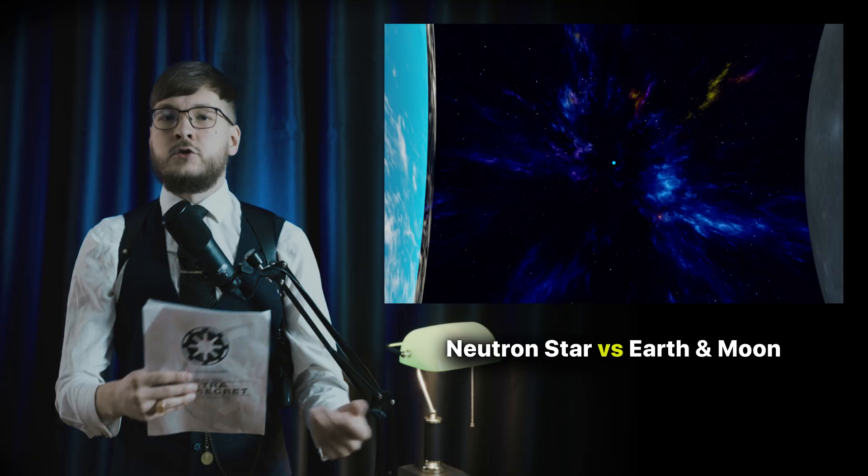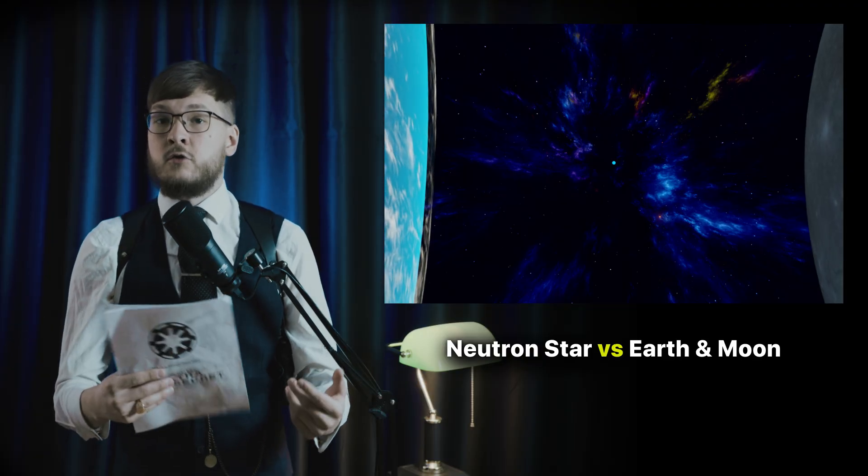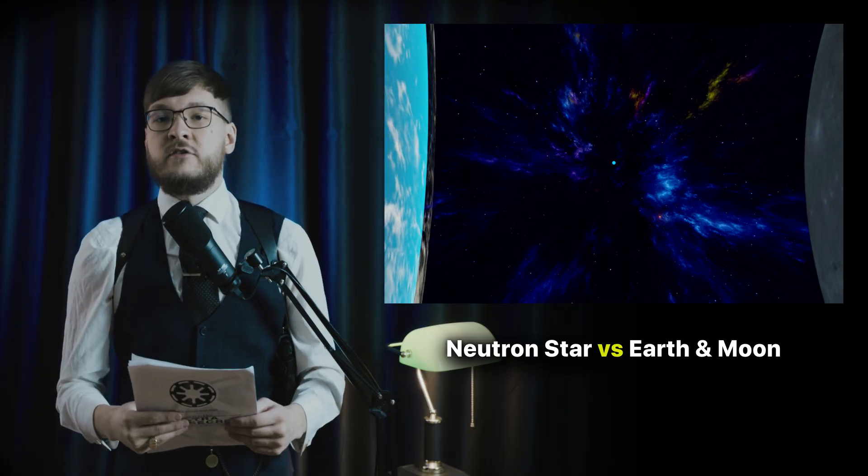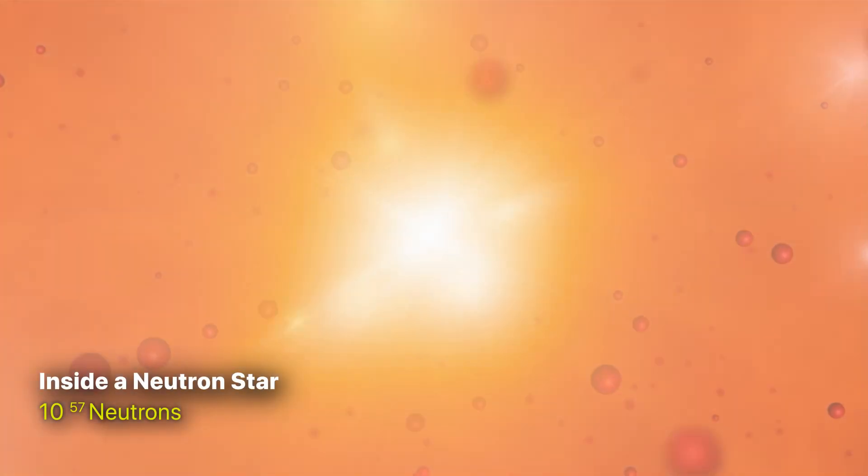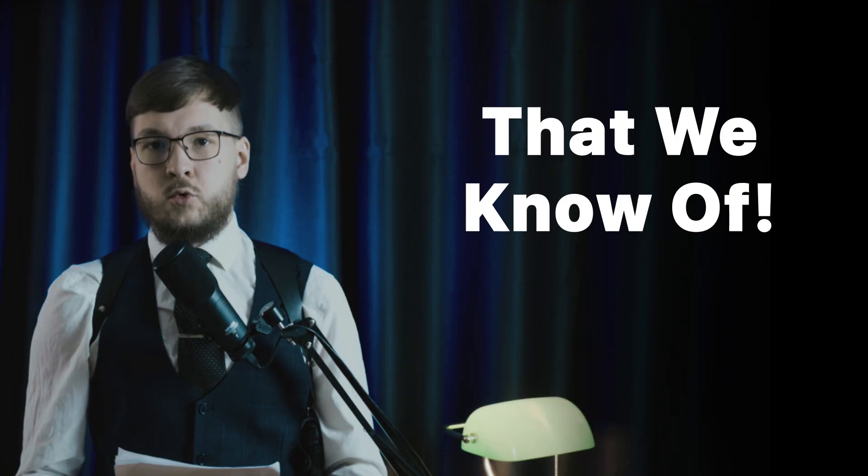If it's roughly 7 to 19 times the mass of our sun, we are left with a neutron star. A neutron star can be thought of as a single humongous atomic nucleus containing roughly 10 to the 57th power neutrons packed into a sphere 4 to 20 kilometers in radius, becoming the densest material we can directly observe that we know of.